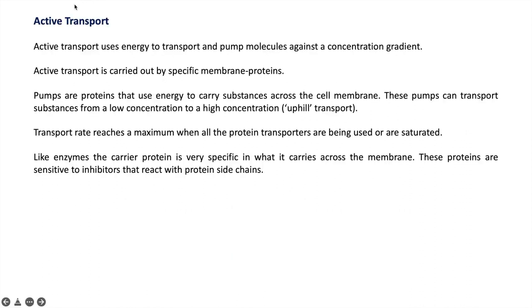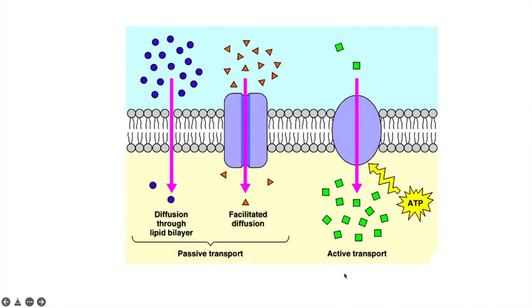The next transport mechanism is active transport. Active transport uses energy to move molecules from low concentration to higher concentration. Moving substances against the concentration gradient requires a specific pump. In plants, these pumps are specific membrane proteins that bind with the substance and move it from low to high concentration — called uphill transportation. If the protein becomes saturated, transport stops. Inhibitors that block this protein also stop transport, and proteins are very specific in nature.